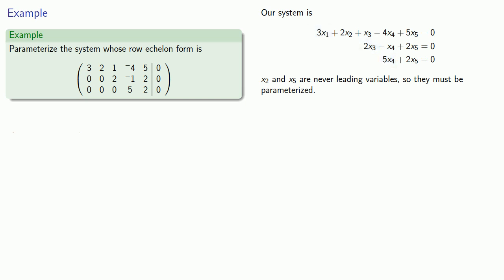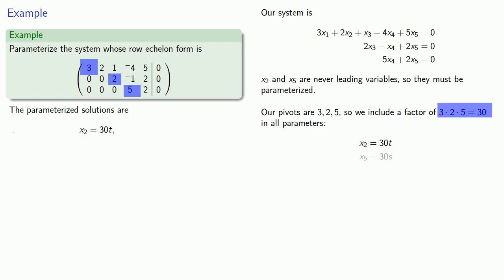Now, our pivots are 3, 2, and 5. So let's include a factor of 3 times 2 times 5, that's 30, in all of our parameters. So that means we'll let x2 be 30t, and x5 is going to be 30s.